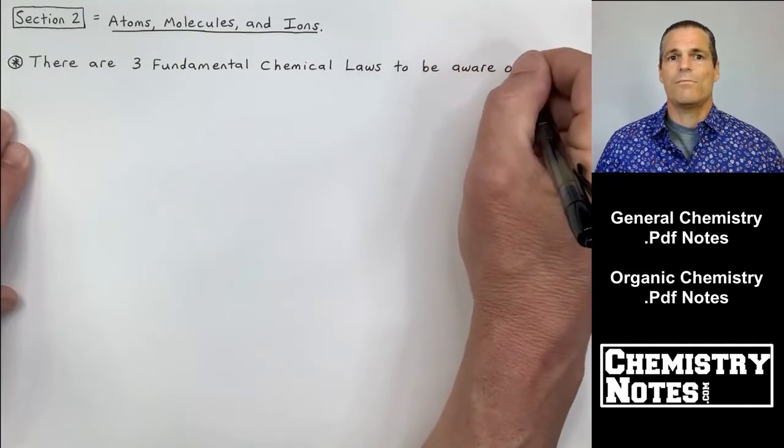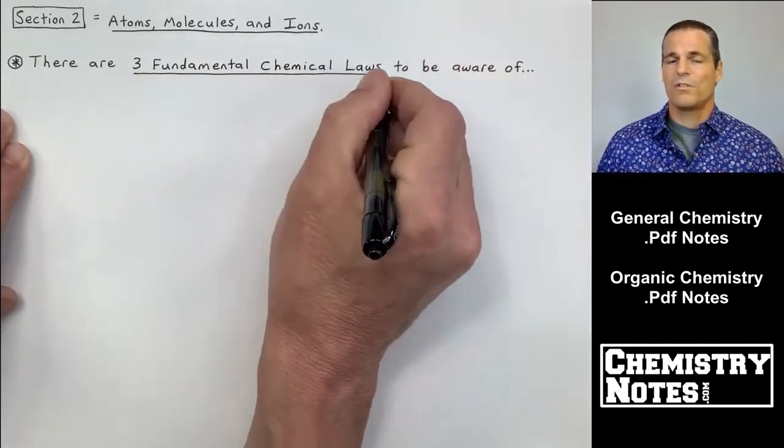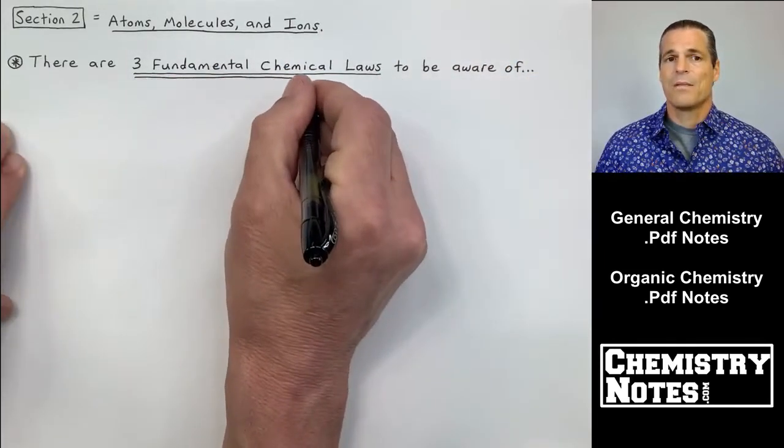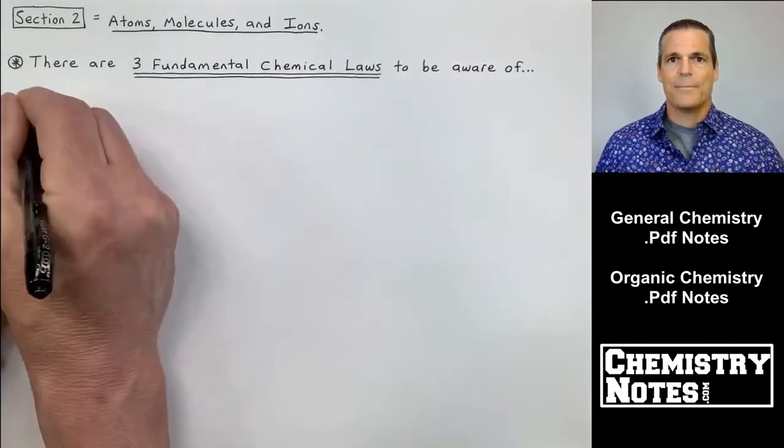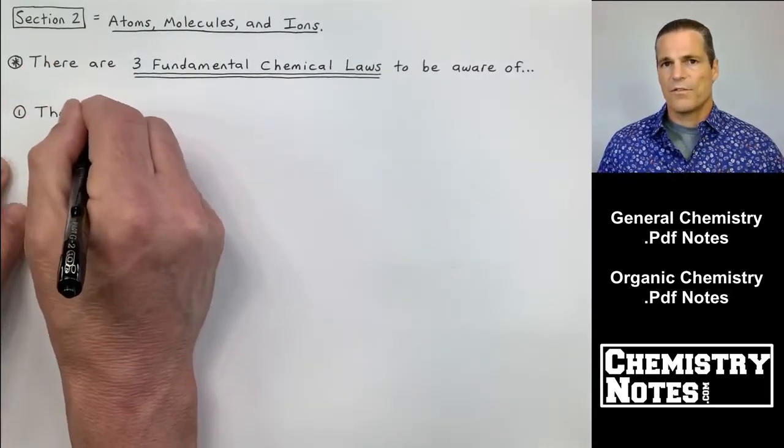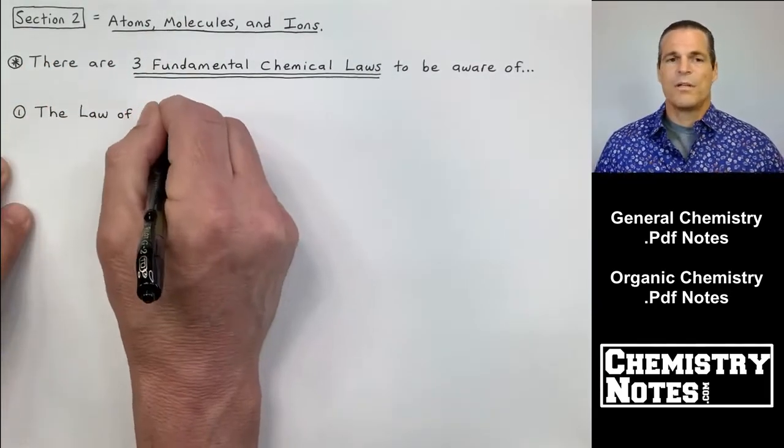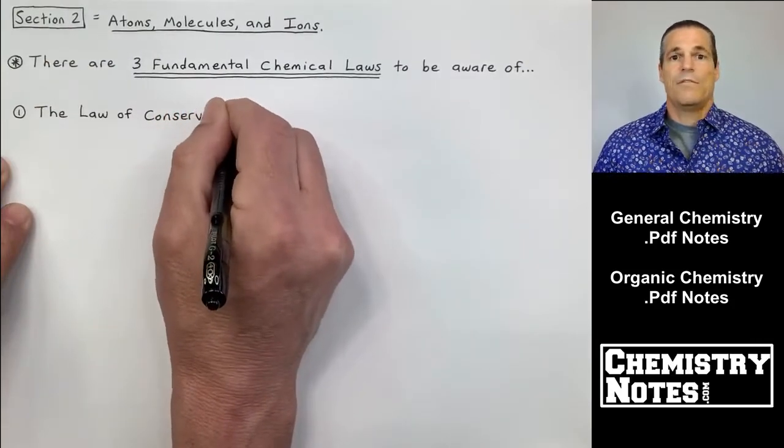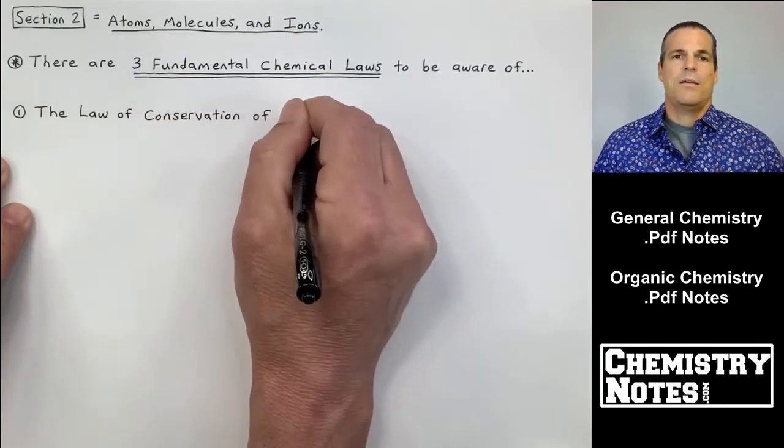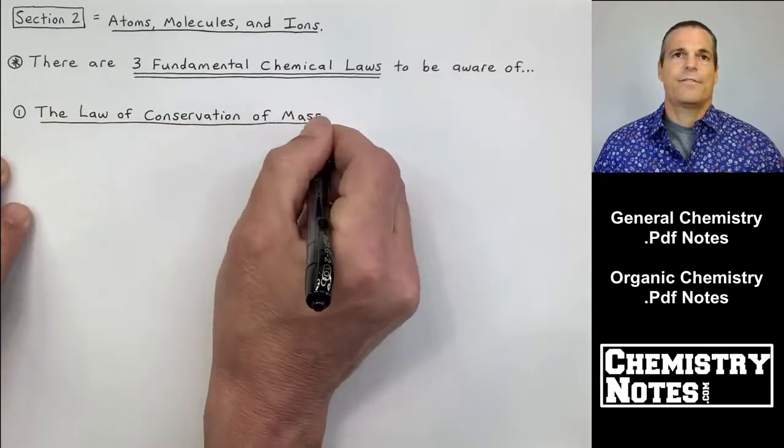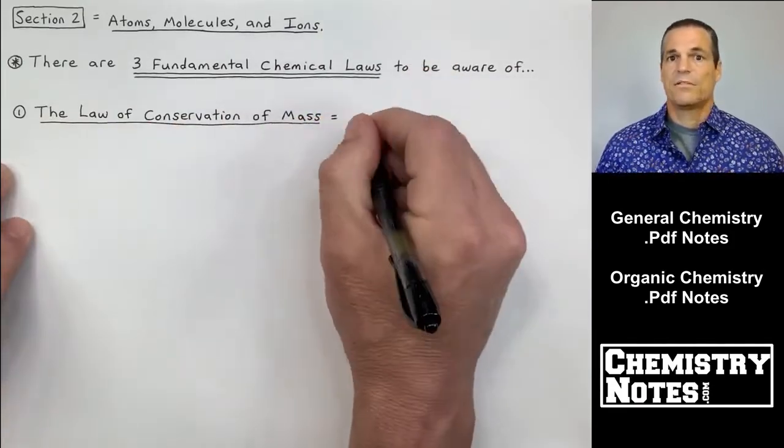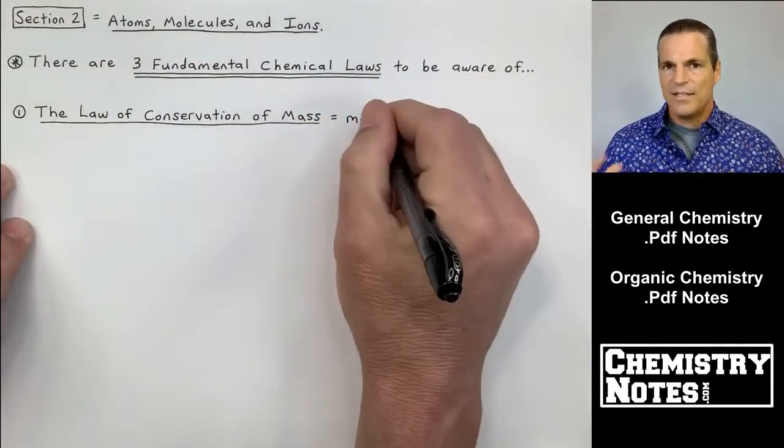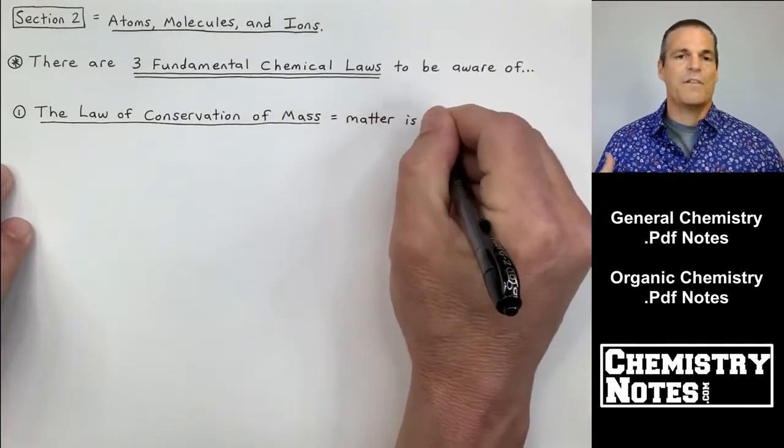Now in this video and some of the earlier videos for section two, we're going to talk about some of the history. People like Rutherford and Dalton and Lavoisier and Mendeleev and there's some other one, JJ Thompson.